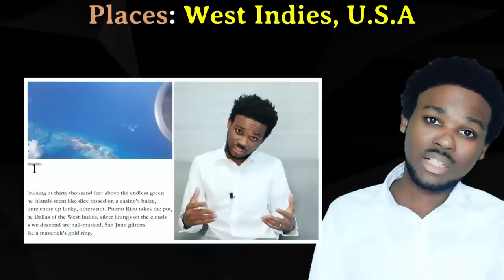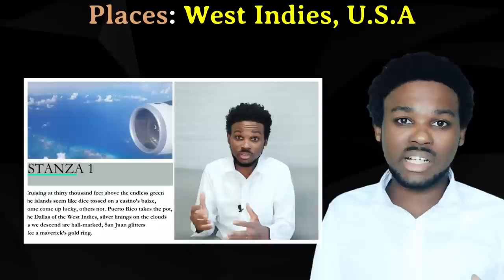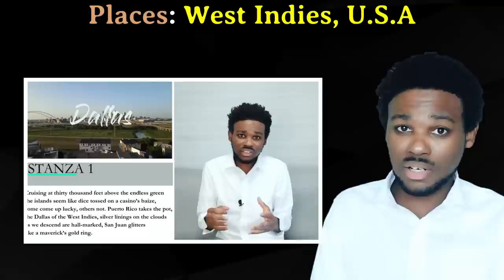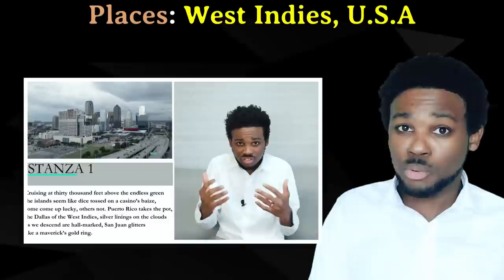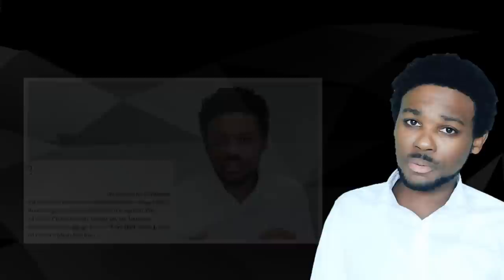Quite a few of the poems put quite a bit of emphasis on various places. In West Indies USA, the whole point of the poem is the comparison of two places: the USA and the West Indies. Several Caribbean islands are named in the poem. Of critical importance is Puerto Rico, which is a place that seems to be caught between the USA and the West Indies. There is the perception that Puerto Rico is better off than the other Caribbean islands being affiliated with the US. However, the poem goes into how this perception does not coincide with reality. The financial situations, the cultures, as well as the nature of several places are explored.